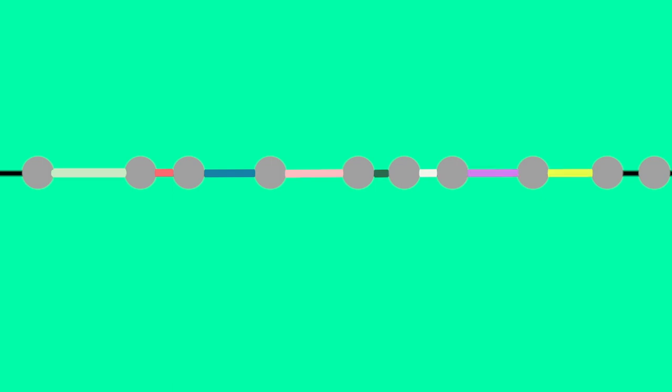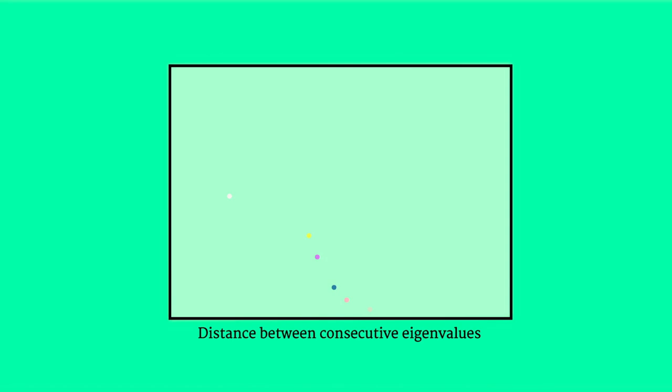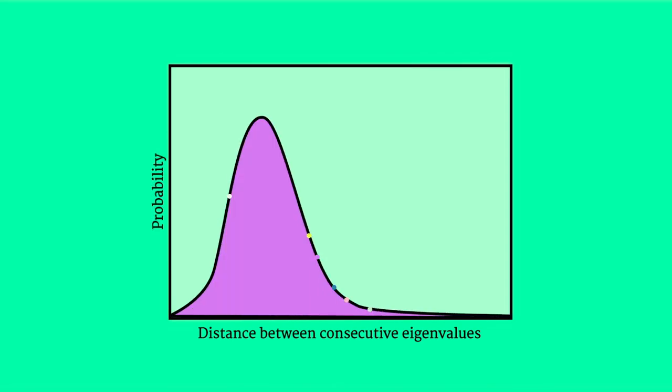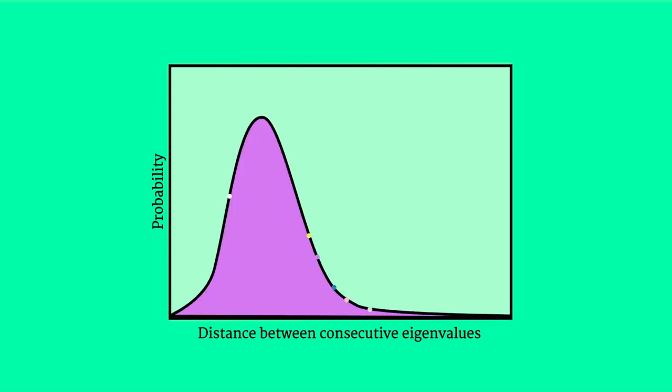If you plot the distance between consecutive eigenvalues on the x-axis and the probability of getting a particular spacing on the y-axis, the familiar lopsided curve begins to appear. Researchers are still looking for a general answer to where this universal pattern comes from, but clues continue to emerge.